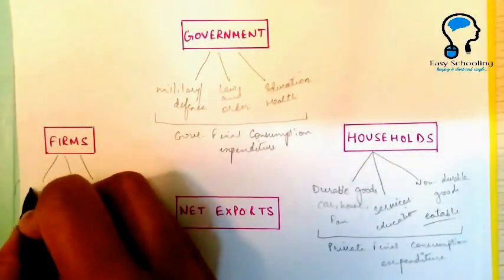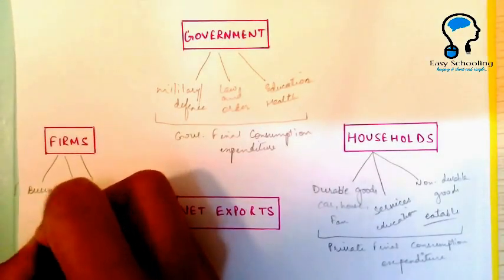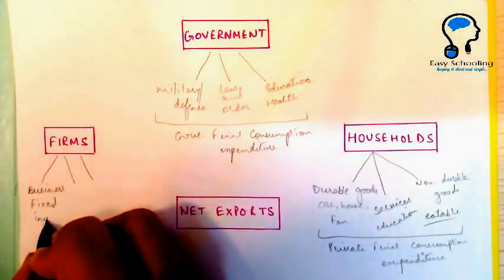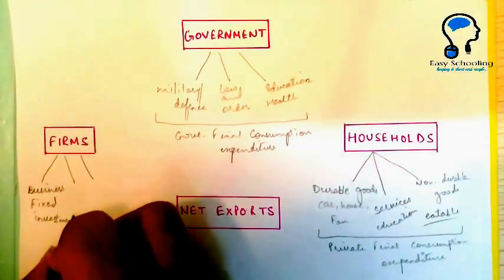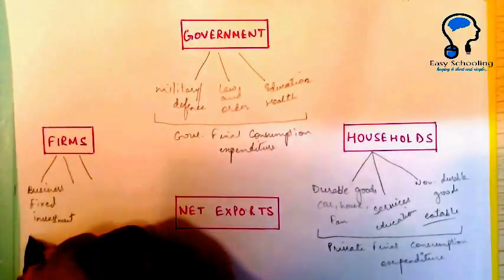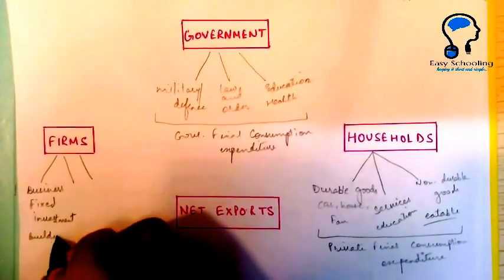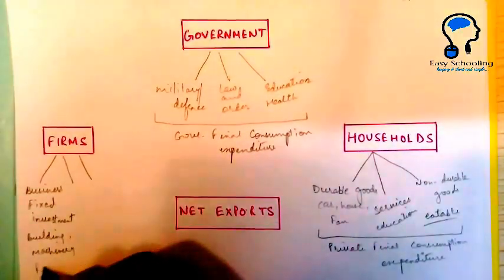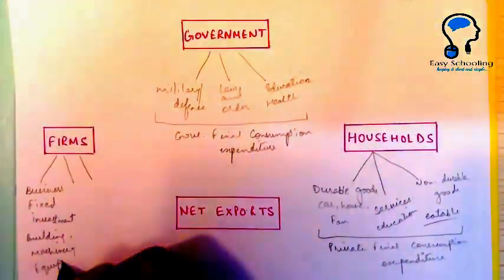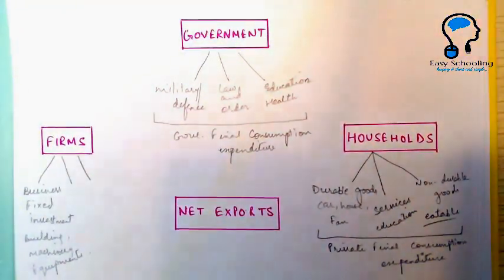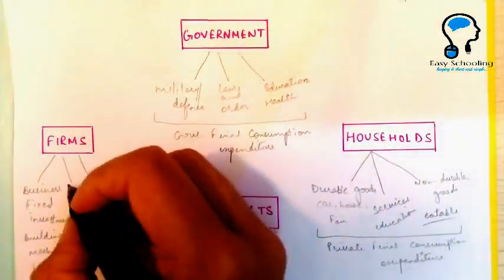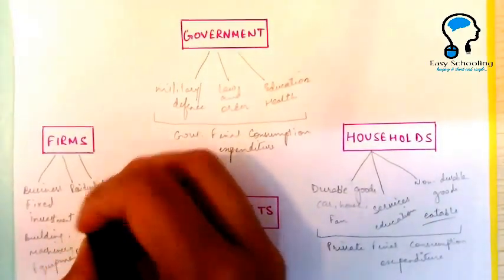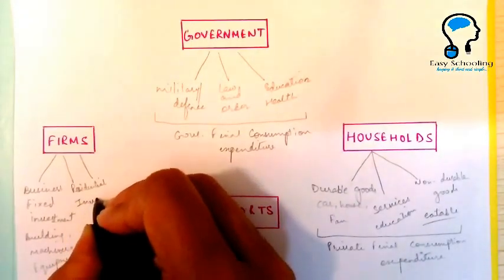The next component is business fixed investment — that is, investment in building, machinery, or equipment that is required. The second kind of investment is residential investment, which occurs when houses or buildings are constructed.